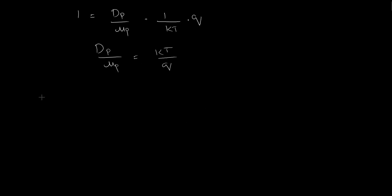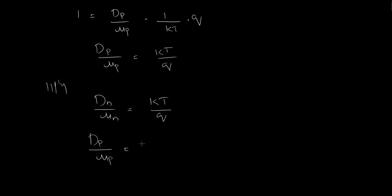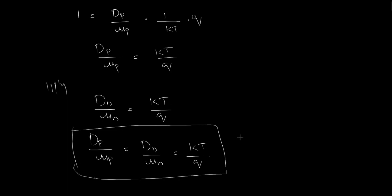We can find that Dn by mu_n is equal to kT by Q. So now Einstein's relation is proved: Dp by mu_p equals Dn by mu_n equals kT divided by Q. Hence proved, the Einstein relation.